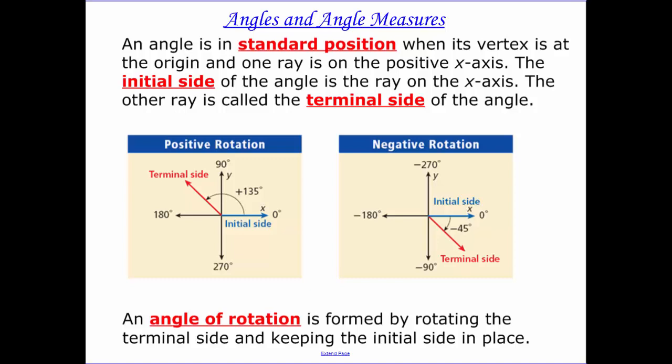Today we're going to be talking about angles and angle measures. An angle is in standard position when its vertex is on the origin and one ray is on the positive x-axis, and that's called our initial side.